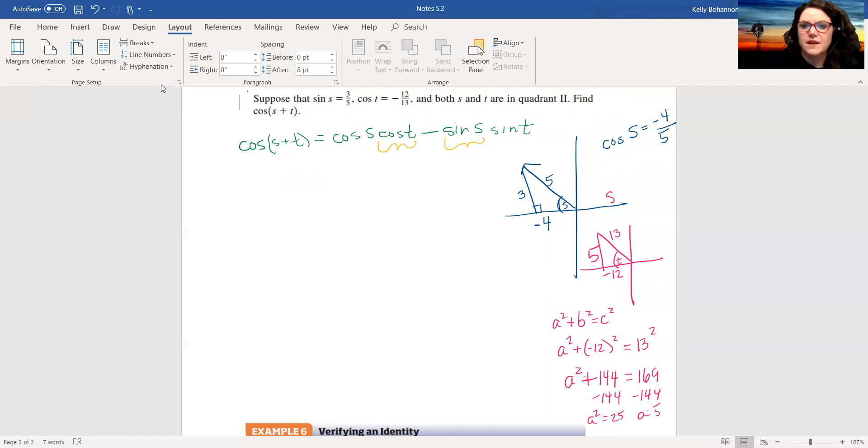So that means that sine of t is 5 over 13 and in quadrant 2 sine is positive. So now I can go in and plug in these values. It's already written here. I don't need to write it again. Okay, so I'm going to plug in values now.